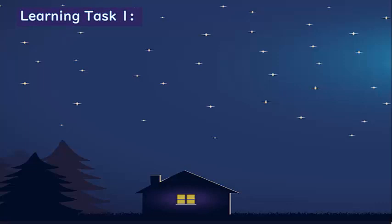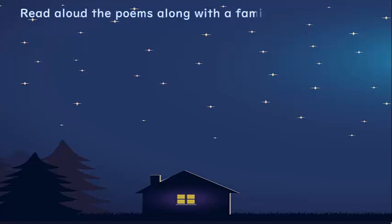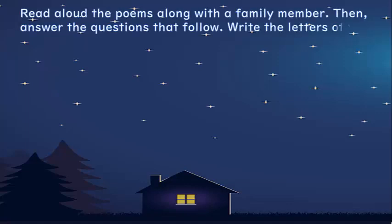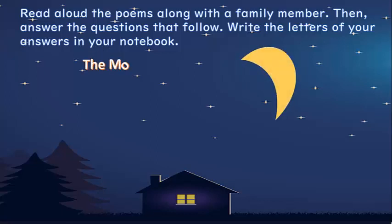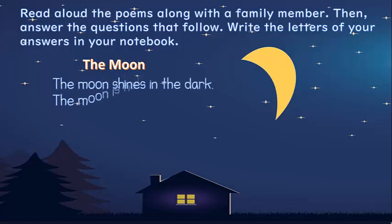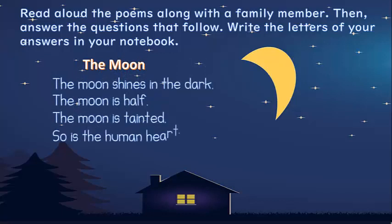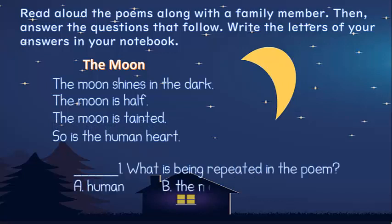Now, let's test how well you understood the lesson. Let's answer our activity — task number one. Read aloud the poems along with a family member, then answer the questions that follow. Write the letters of your answers in your notebook. The Moon: The moon shines in the dark. The moon is half. The moon is tainted. So is the human heart. What is being repeated in the poem? A. Human. B. Moon. C. Heart. You're right — letter B, the moon.